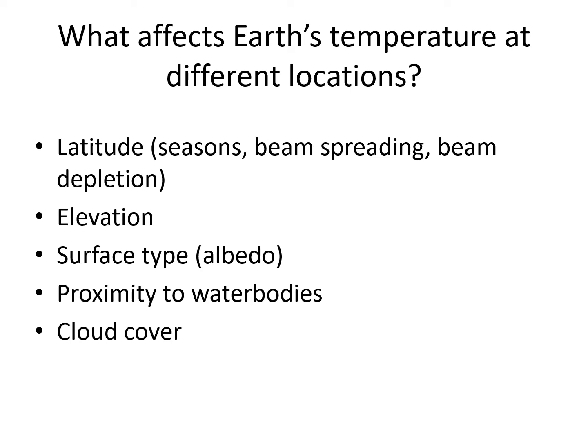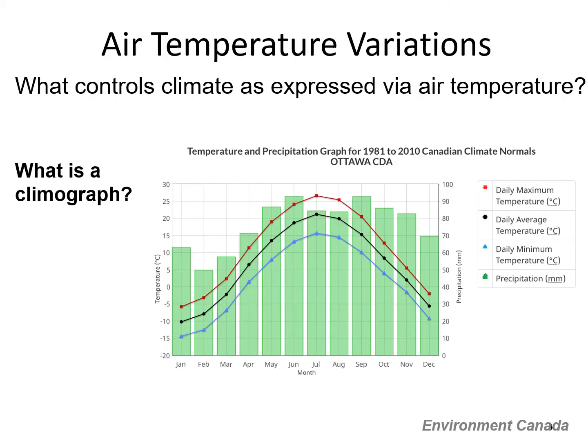What is a climate graph? A climate graph summarizes average monthly climate data, typically temperature and precipitation, from a particular location. Usually, temperature averages are shown by line graphs and precipitation by bar graphs.